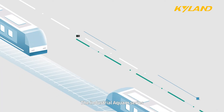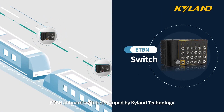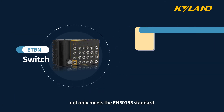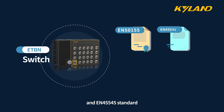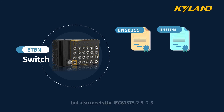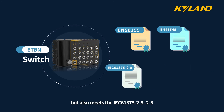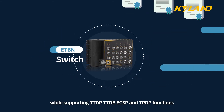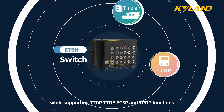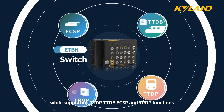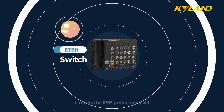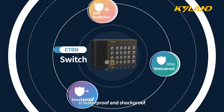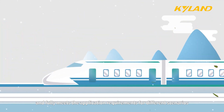The industrial AQUEM series ETBN onboard switch developed by Kylan Technology not only meets the EN50155 standard and EN45545 standard, but also meets the IEC 61375-2-5, 23, and 34 standards, while supporting TTDP, TTDB, ECSP, and DRDP functions. Additionally, it meets the IP65 protection level, is waterproof and shockproof, and fully meets the application requirements for differing scenarios.